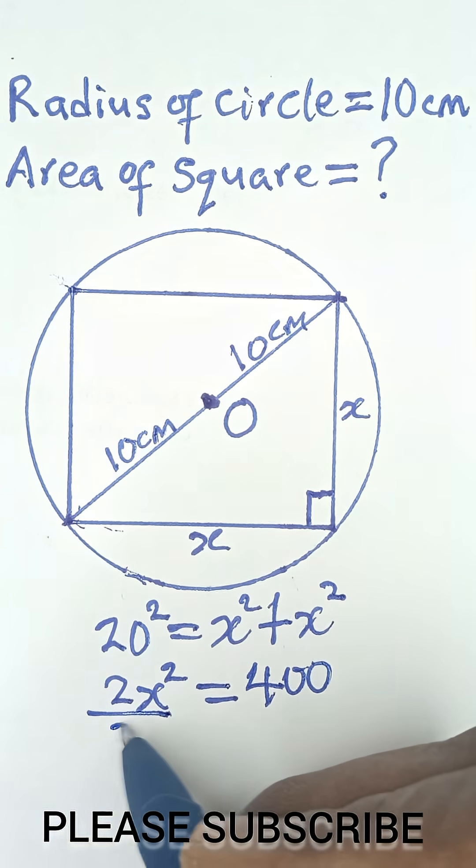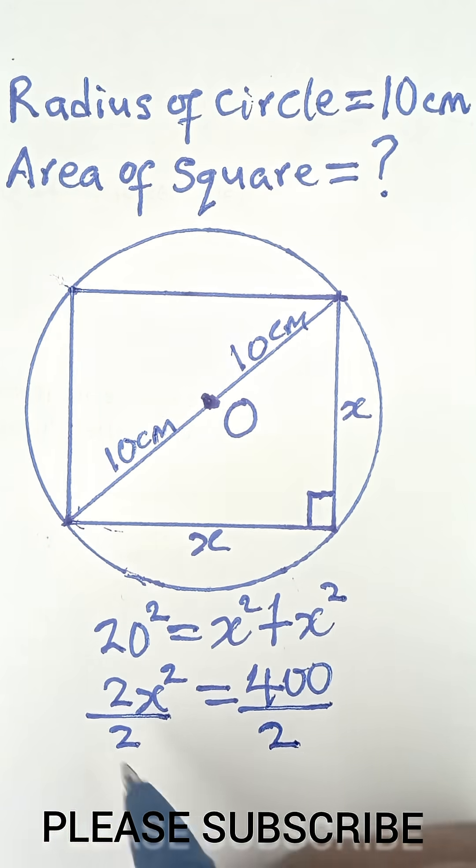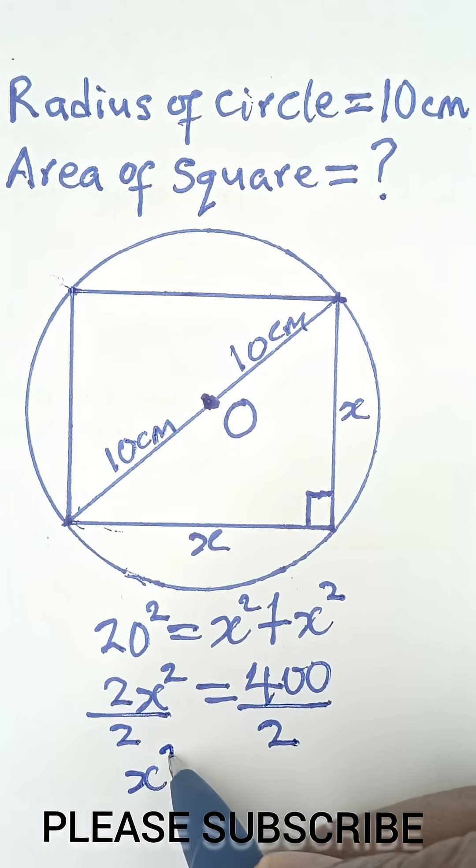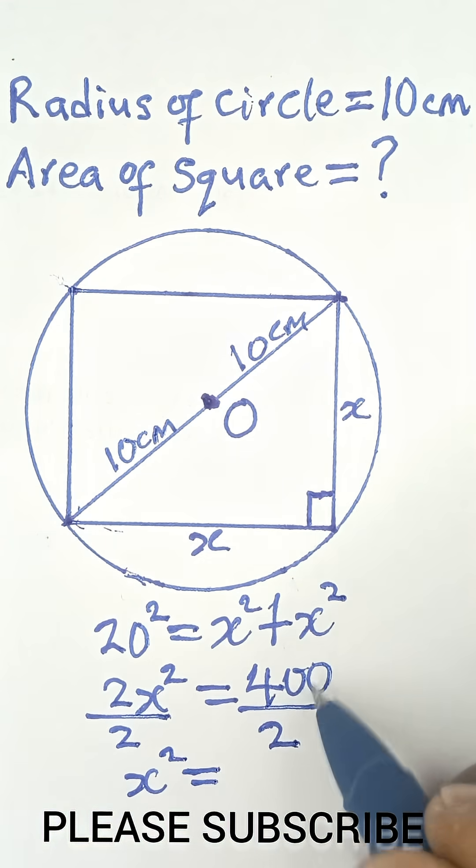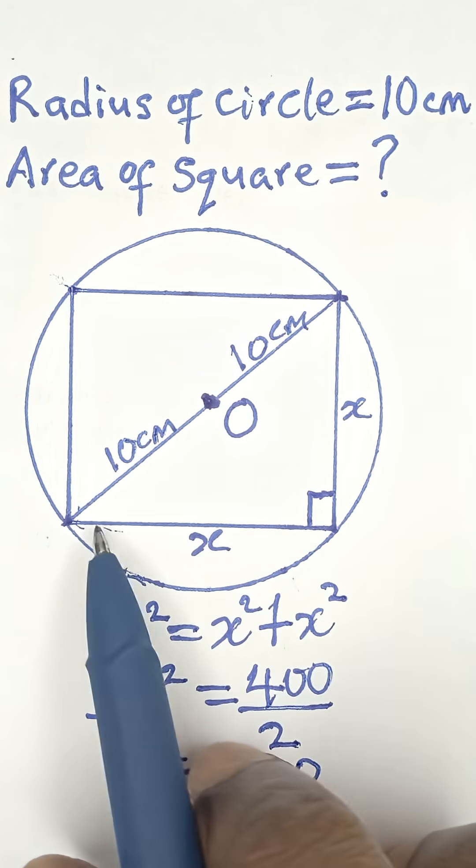So now I can divide both sides by 2. And I'm left with x square is equal to 400 divided by 2, which is 200.